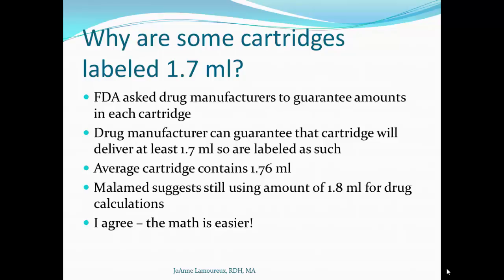The history behind this has to do with the FDA, who asked drug manufacturers to guarantee the amount in each cartridge. The manufacturers cannot guarantee delivery of an entire 1.8 mL, but they can guarantee at least 1.7. In actuality, the average cartridge contains 1.76 mL. Malamed suggests we still use 1.8 mL for drug calculations — it divides more easily, and if we're actually delivering 1.76 while stating 1.8, we're delivering less than we think, which is safer for the patient.